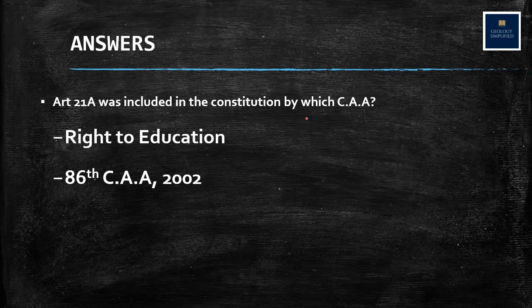Article 21A was included in the constitution by which constitutional amendment act? Article 21A is the right to education. This article was included by the 86th Constitutional Amendment Act in 2002. Later, it was enforced by the Right to Education Act for children in 2009. This enabling provision — Article 21A — is the latest inclusion in fundamental rights.